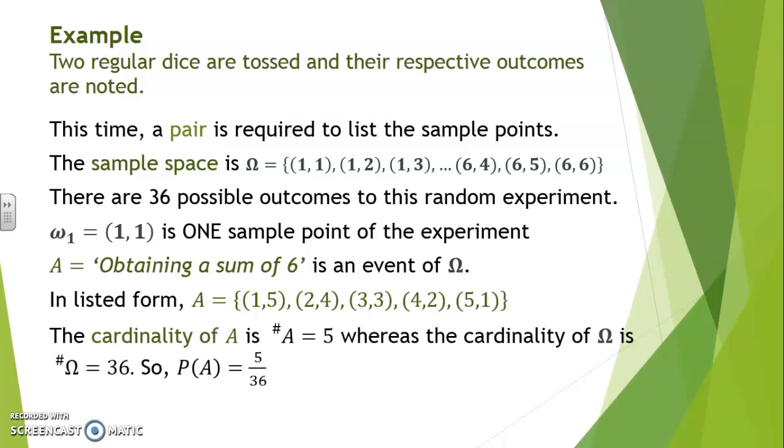The cardinality of A is 5, whereas the cardinality of omega is 36. So the probability that A will be realized is 5 over 36.